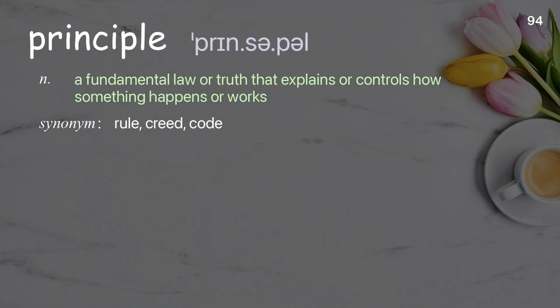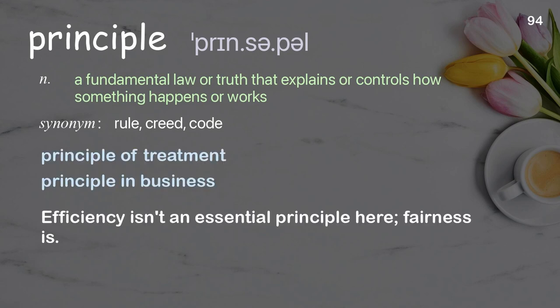Principle: a fundamental law or truth that explains or controls how something happens or works. Examples: principle of treatment, principle in business. Efficiency isn't an essential principle here; fairness is.